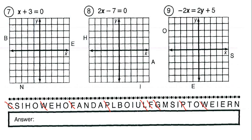Next: x equals negative 3 — just subtract to isolate x. That's a vertical line at x equals negative 3, which goes straight through N.